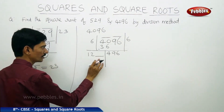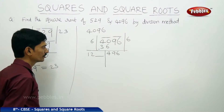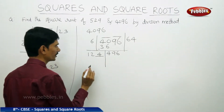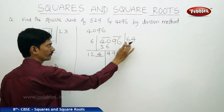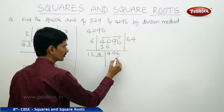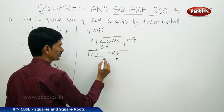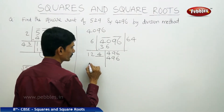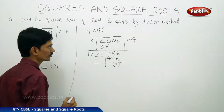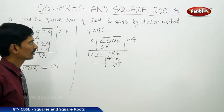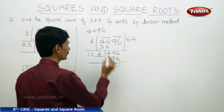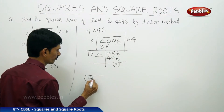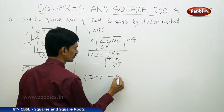So there is a chance of 4 or 6 to be taken in the blank. First take 4 and check: if you take 4 here and multiply 124 by 4 — 4 fours are 16, 4 twos are 8 plus 1 is 9, 4 ones are 4 — the remainder is 0. When you get the remainder 0, the quotient is the required square root of 4096. So the square root of 4096 equals 64.